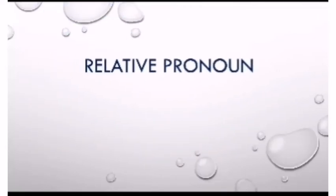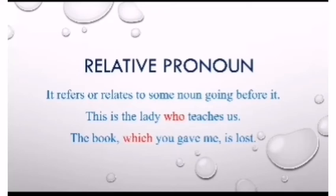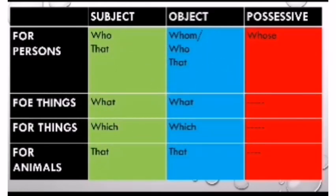Next one is relative pronoun. It refers to or relates to some noun going before it. Like: 'This is the lady who teaches us' and 'The book which you gave me is lost.' You remember we normally call them the WH family — what, where, when, whose, whom — these are all relative pronouns. Here you can see the chart. In subject form, whenever we relate to the subject part, we use: who, that, what, which. And if it is being used as an object, we use: whom, who, that.